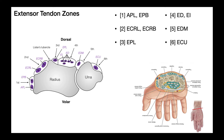The fourth zone is pretty straightforward — it has the extensor digitorum tendons and extensor indicis. In zone four, the superficial tendons are extensor digitorum. The extensor indicis tendon is deep to that of extensor digitorum. Extensor digitorum sends tendons to digits two, three, four, and five, while extensor indicis only goes to the index finger, which is digit two.